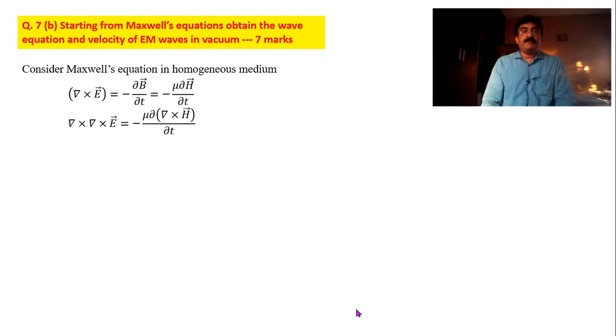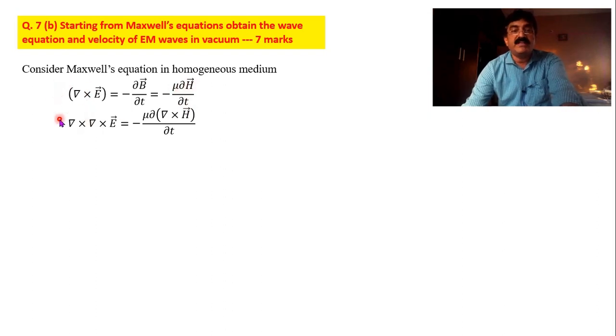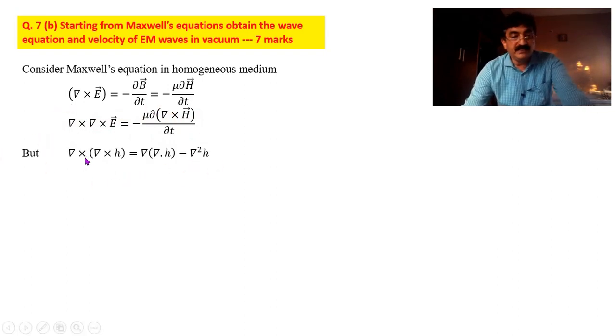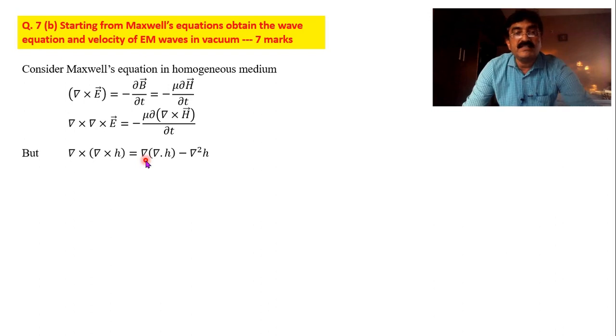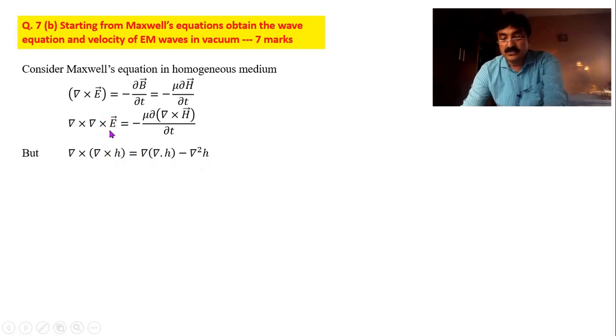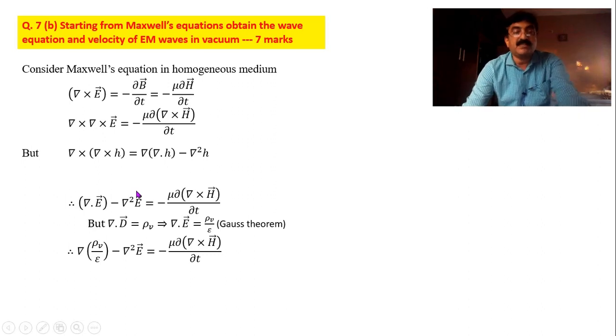Now next question 7b: starting from Maxwell's equation obtain the wave equation and velocity of electromagnetic waves. This is one of the important derivations. First I start with Maxwell's equation: ∇×E = -∂B/∂t. B is nothing but μH. Therefore it is μ ∂H/∂t. Now both the sides you multiply by del. That means take the curl. That means del cross here, del cross here. So when I put del cross here, this side I put del cross here. Just follow the steps carefully.